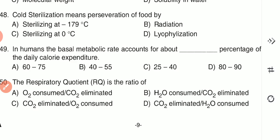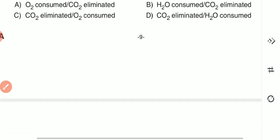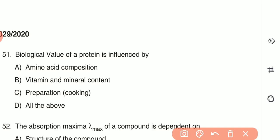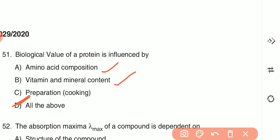Question 51: The biological value of protein is influenced by — (A) amino acid composition, (B) vitamin and mineral content, (C) preparation of food (cooking), or (D) all of the above. The biological value of protein is influenced by all of the above — amino acid composition, vitamin and mineral content, and cooking.